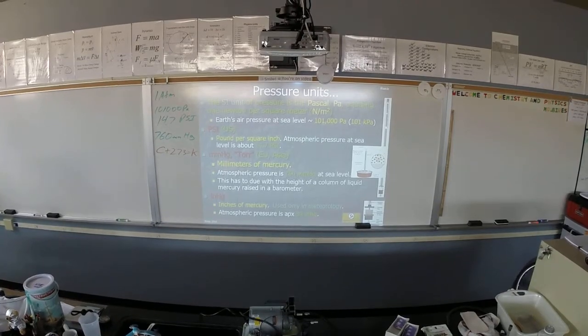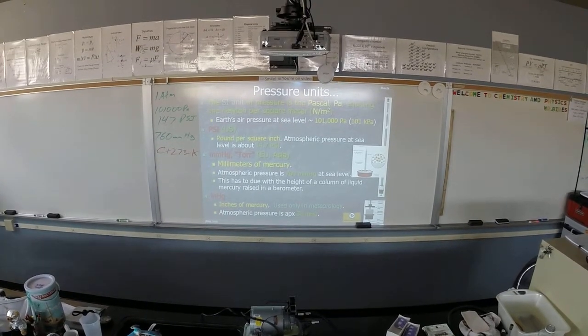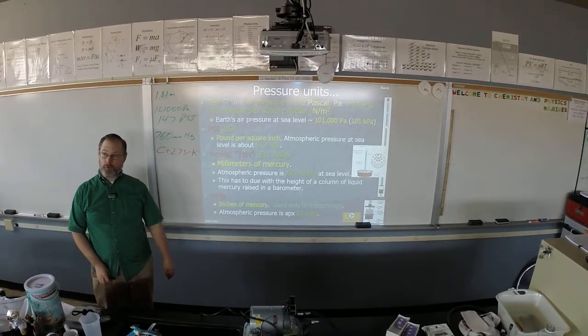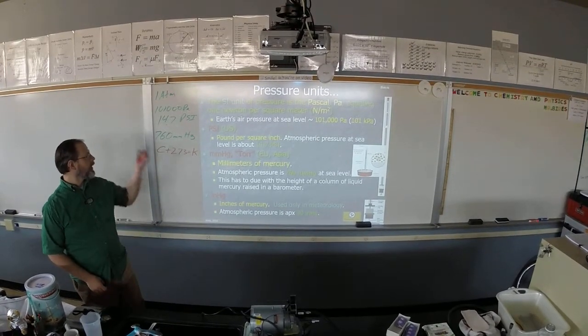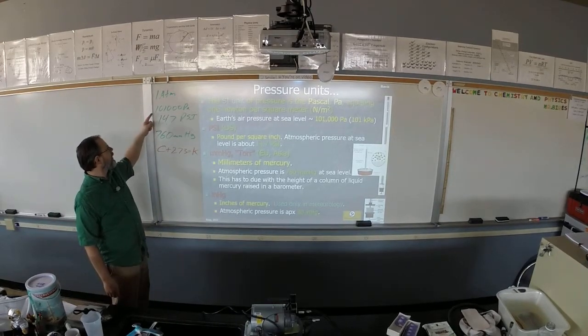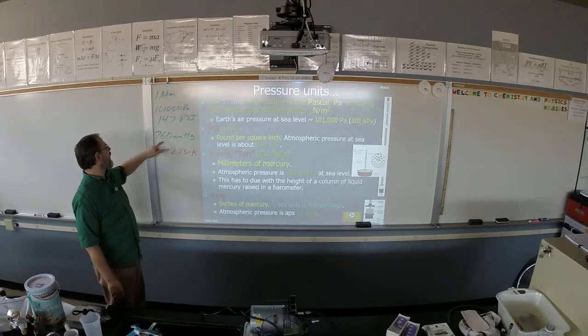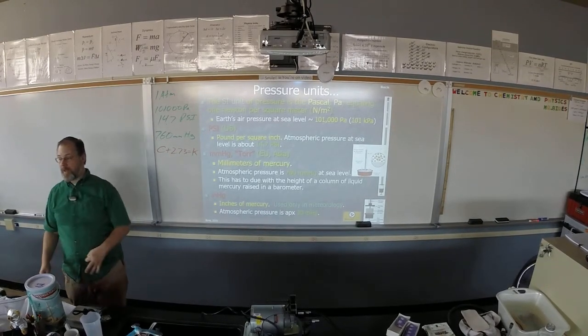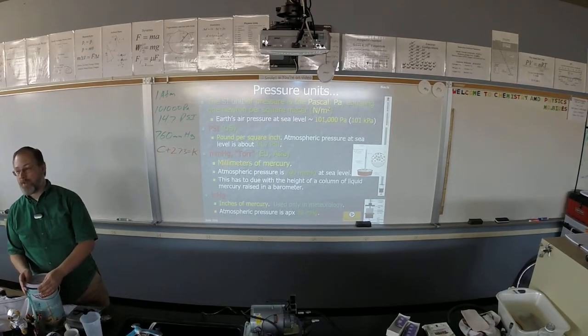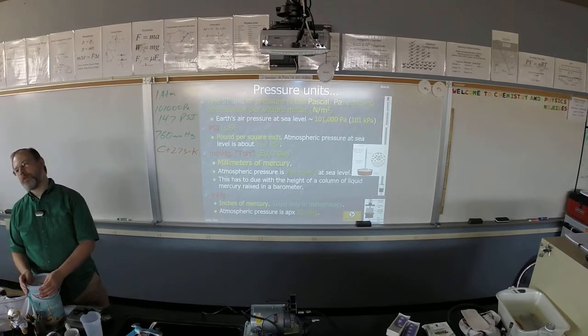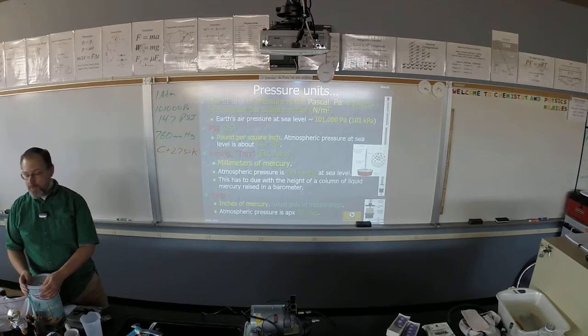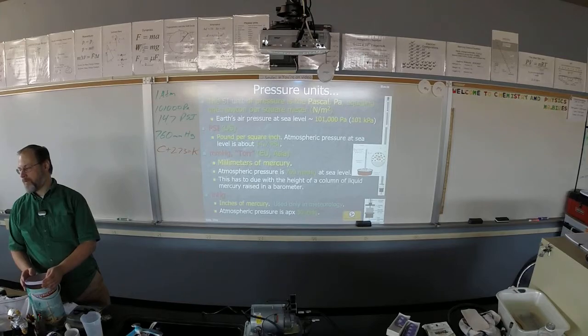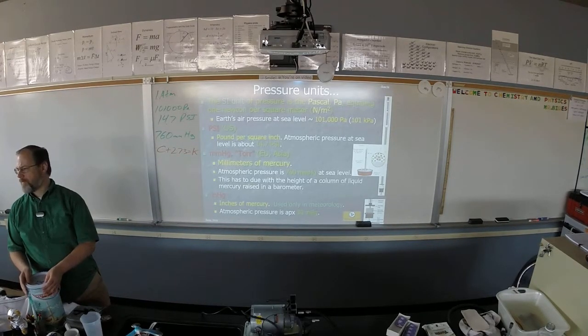Alright, so once again, if you missed yesterday on the pressure units I strongly recommend you go through the lecture on Google Classroom. But here they are: one atmosphere is 101,000 Pascals, 14.7 psi, 760 millimeters of mercury. If we ever need to convert temperatures, you need to convert into Kelvins. To convert temperature to Kelvin, take your Celsius add 273 and that's your Kelvin.